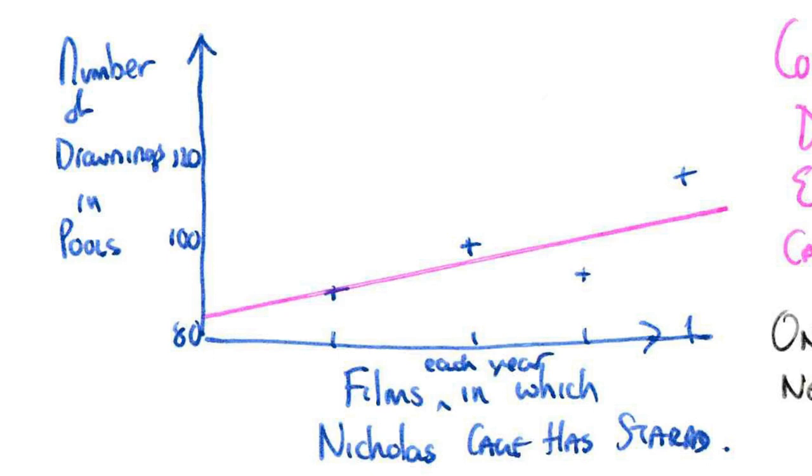When he stars in three films, it's around 90 people drowning pools. And when he stars in four films, that's about 110 people drown in pools. So there seems to be a sort of correlation. The more films he appears in each year, the more people drown in pools.